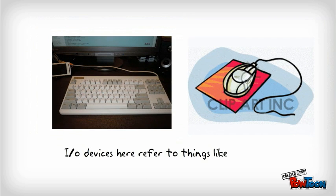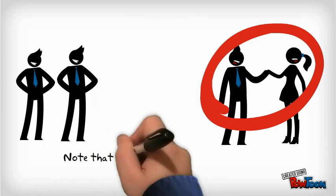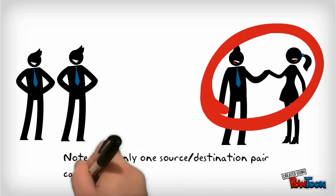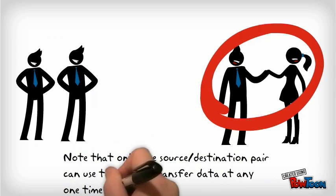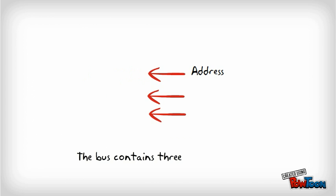I/O devices here refer to things like keyboards and mice. Note that only one source-destination pair of units can use this bus to transfer data at any one time. A bus contains three sets of lines: address, data, and control.